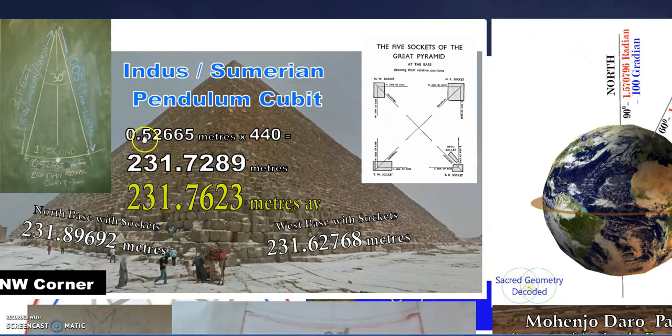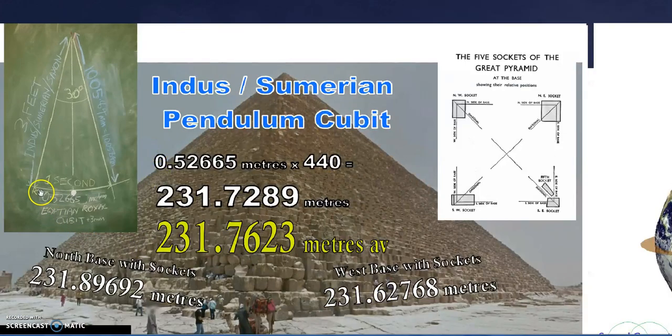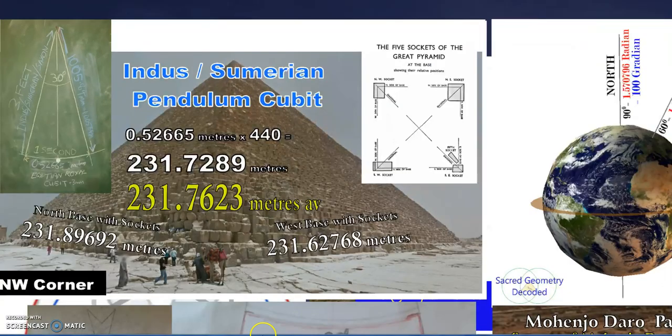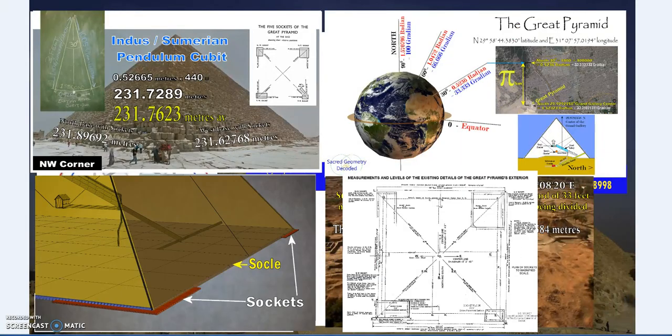If you divide that by 440, what do we get? 0.52663 meters—three millimeters longer than the Egyptian royal cubit at a meter. That is created by a yard or three Mohenjadaro feet, which are also Sumerian and later Saxon—1.00584 meters—creates a cubit at 30 degrees swinging at one second.